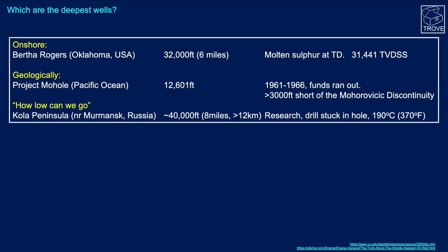What are the deepest wells? Onshore, the Bertha Rogers in Oklahoma drilled to 32,000 feet, of which about 31,500 feet was the TVD subsea depth — and that well actually reached TD in molten sulphur. Geologically, one of the deepest wells was Project Moho in the Pacific Ocean, drilled between 1961 and 1966 when funds ran out. It only drilled to 12,601 feet — 12,000 feet of that was water — but came just over 3,000 feet short of the Mohorovic discontinuity, the point defining the base of the crust and the start of the mantle.